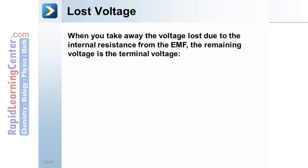When you take away the lost voltage due to the internal resistance from the EMF, the remaining voltage is the terminal voltage. We can think of this as EMF minus I times R of the battery equals our terminal voltage. Or EMF minus our lost voltage equals our terminal voltage.